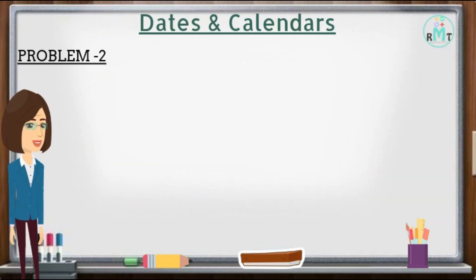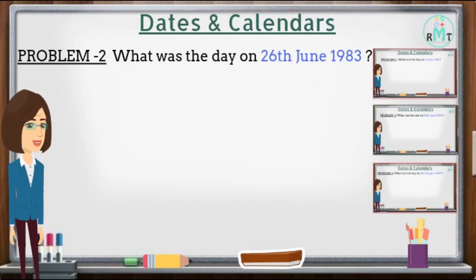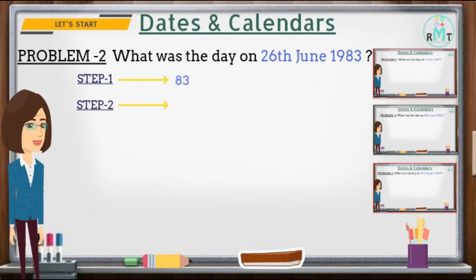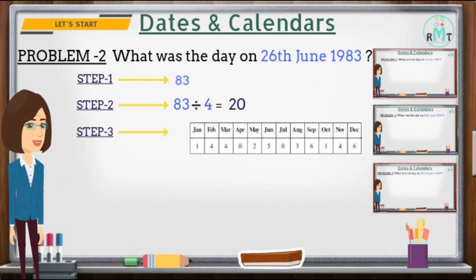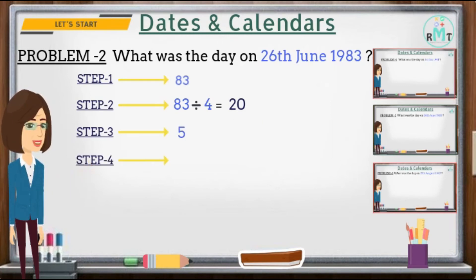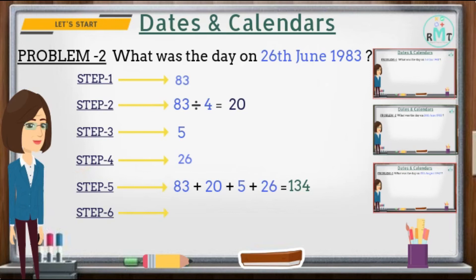Problem 2: What was the day on 26th June 1983? Step 1: Take the last two digits of the year, which is 83. Step 2: Divide 83 by 4 and take the quotient, which is 20. Step 3: Write the key associated with the month June, that is 5. Step 4: Take the date, which is 26. Step 5: Add all the digits — 83 + 20 + 5 + 26 — so we get 134.